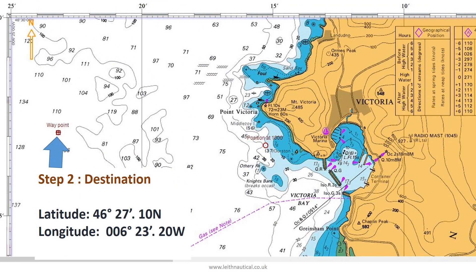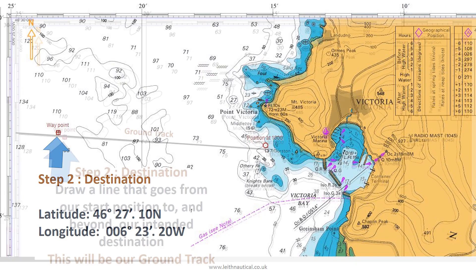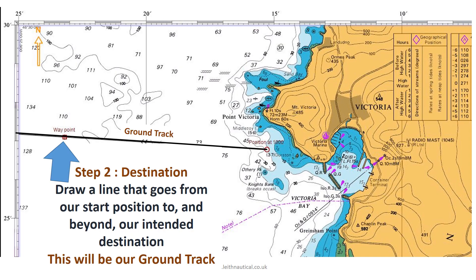Step 2 is our destination. We mark our intended destination on the chart and we can mark this with the symbol for a waypoint. We now draw a line that goes from our start position to and beyond our intended destination. This will be our ground track.